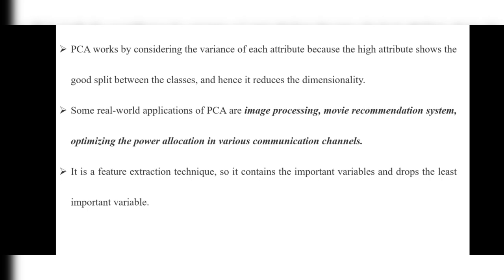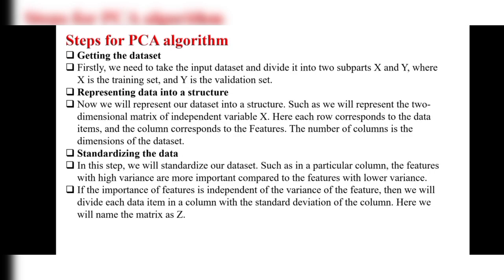Now let's see the steps of the PCA algorithm. Step 1: Getting the dataset. First, we take the input dataset and divide it into two subparts — X and Y — where X is the training set and Y is the validation set.